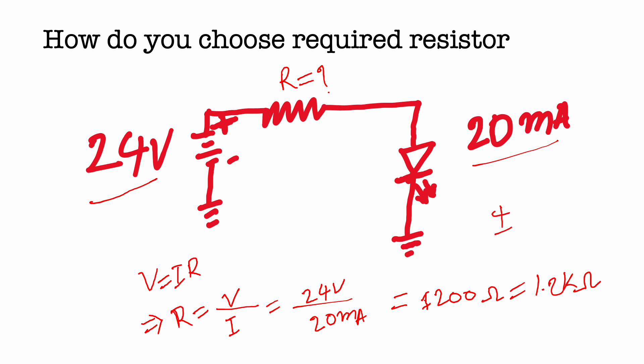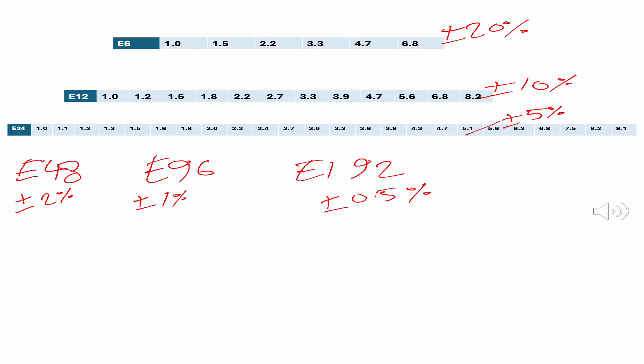If we want to use a plus or minus 5 percent tolerance resistor, let's look at the series for a 1.2 kΩ resistor. For 5 percent tolerance with a 1.2 kΩ value, we use the E24 series which has plus or minus 5 percent tolerance.